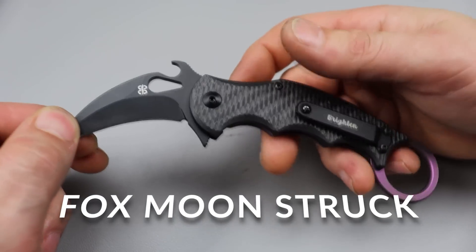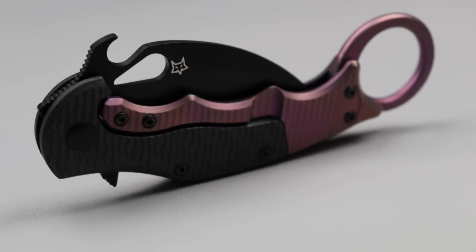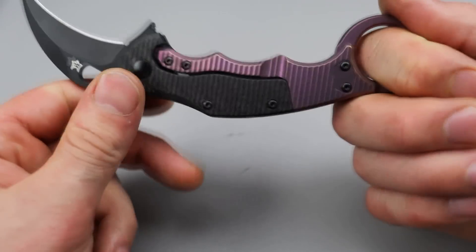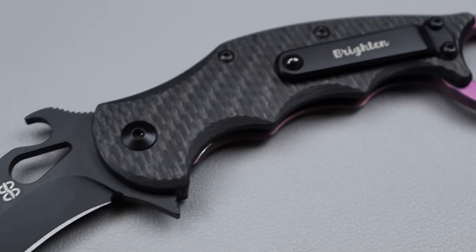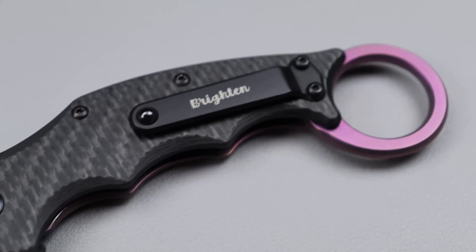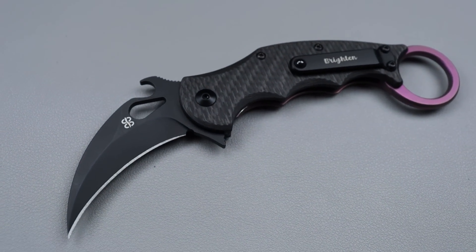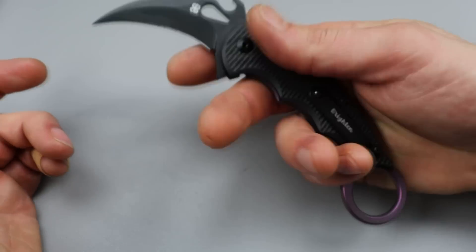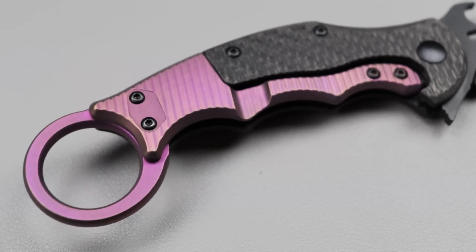Next is the Fox Moonstruck. Now the Fox Moonstruck is made in Italy, and it is a Karambit-style knife with the wave feature. Now, this one is a Brightened Blades design, which is a group of ladies that helps make knives and designs and does collabs for the ladies out there. So they help collab with Fox knives, and I think they have their own stuff too.